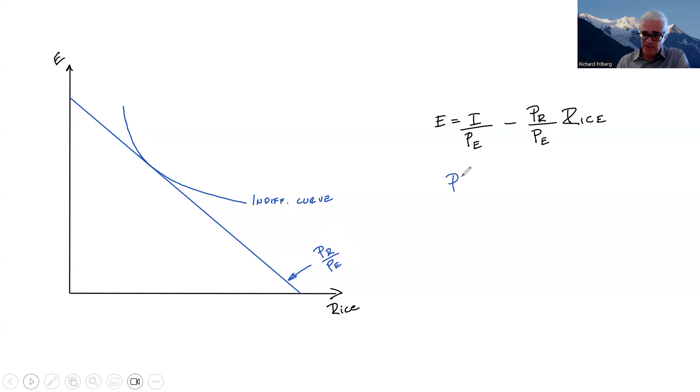Now assume that the price of rice goes up to PR new. That's going to be associated with a new steeper budget constraint, something like this. This is PR new, the higher price of rice over the price of E, which we assume is unchanged. And we have a point of tangency with the new indifference curve, the highest indifference curve that this individual can reach when the price of rice is higher.